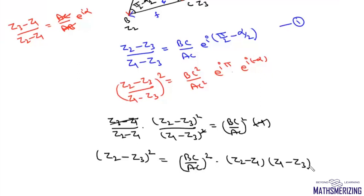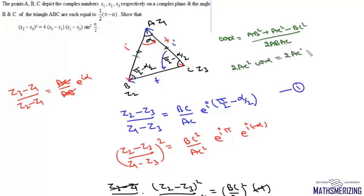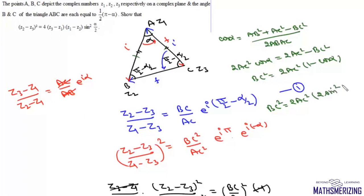We need the value of BC upon AC. Using the cosine rule: cos alpha equals BC squared plus BC upon 2 AB times AC. Since AB equals AC, we write 2 times AC squared cos alpha equals 2 times AC squared minus BC squared, so BC squared equals 2 times AC squared times 1 minus cos alpha.